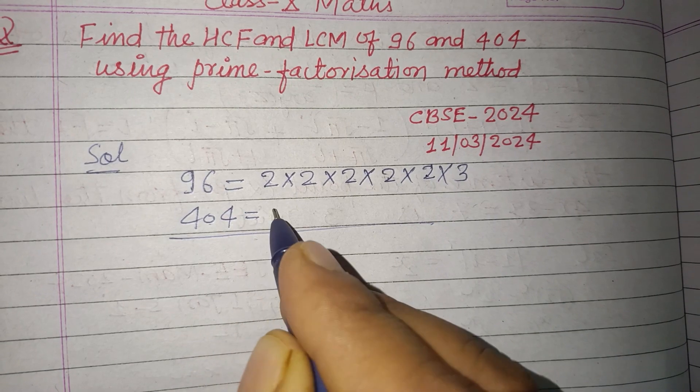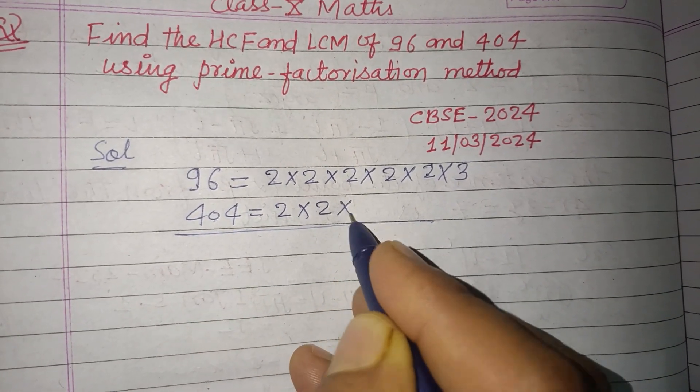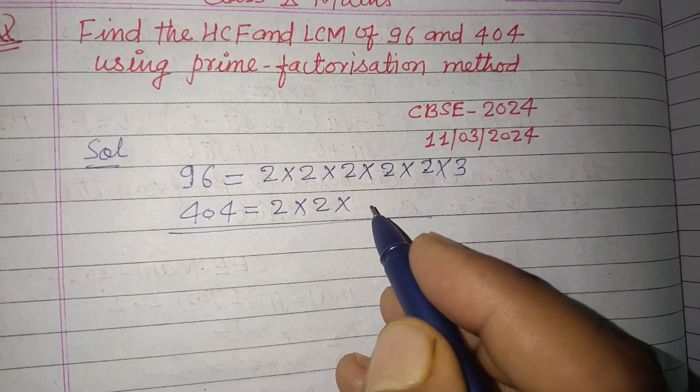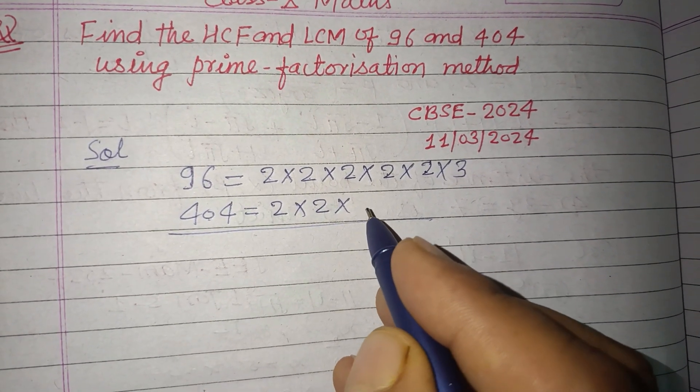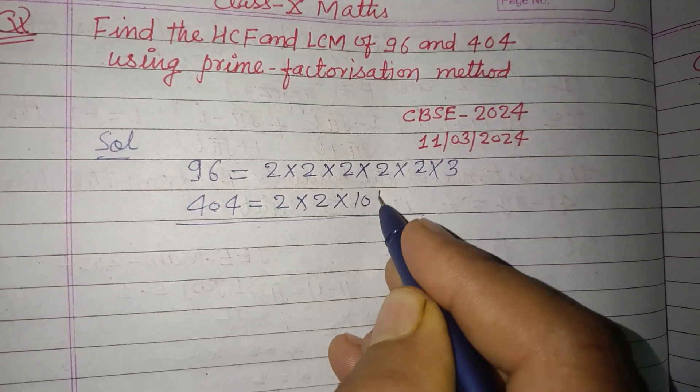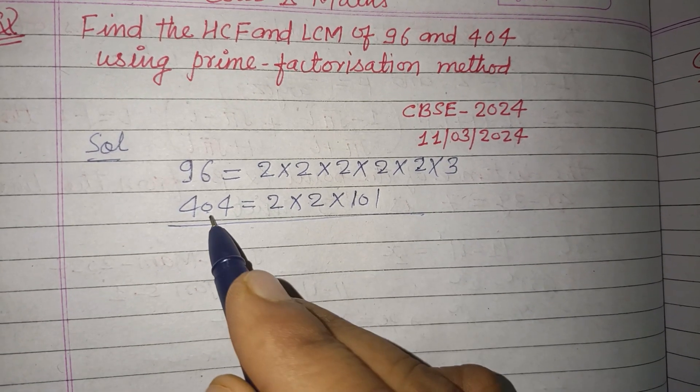Now when we divide 404 by 2, we got 202. When we divide by 2 again, we got 101. So 4 into 101, we got 404.